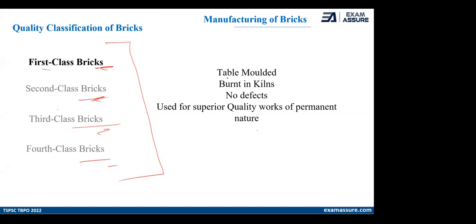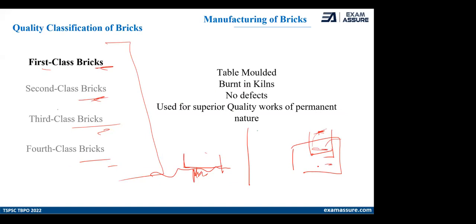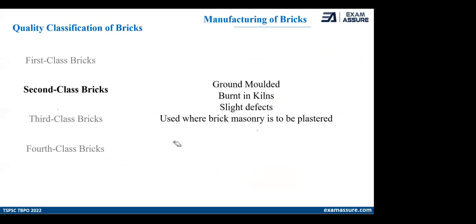In the first class brick, the molder used is table molded. That means the brick is molded on a separate table rather than on the ground. These bricks have uniform shape and size and are much better than ground molded bricks because they are done one by one carefully. In first class, they are usually table molded, defect-less, and used for superior quality permanent work. So if asked which brick is used for superior quality permanent work, you will answer: first class brick.